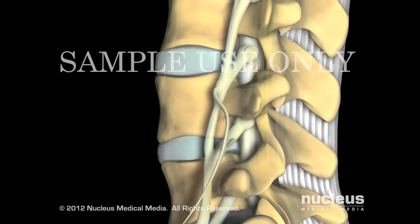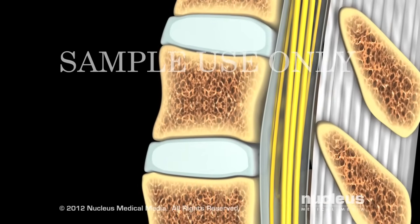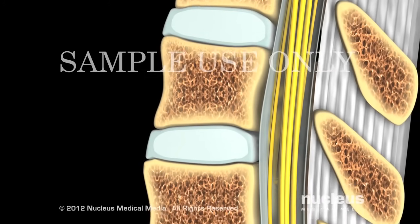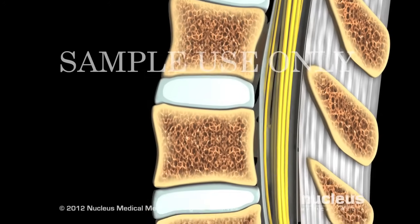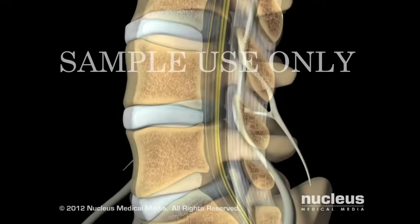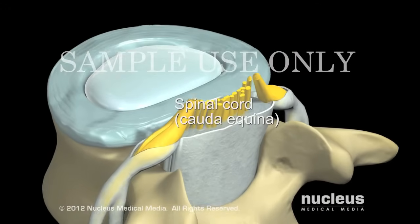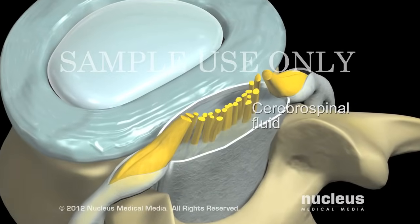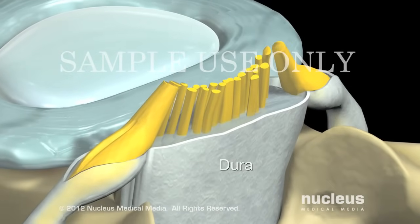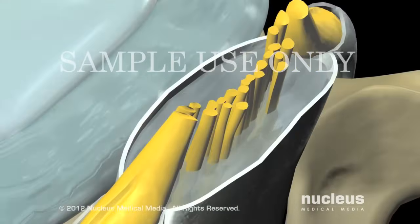The spine consists of bony vertebrae stacked one on the other, shock-absorbing intervertebral discs lying between the vertebrae, ligaments and muscles connecting the bones, and the spinal cord with its branching spinal nerves. The spinal cord is bathed in cerebrospinal fluid and surrounded by a protective membrane called the dura. Just outside this membrane is the epidural space.